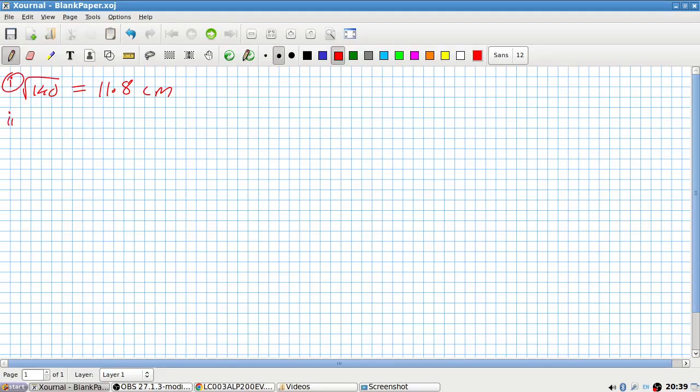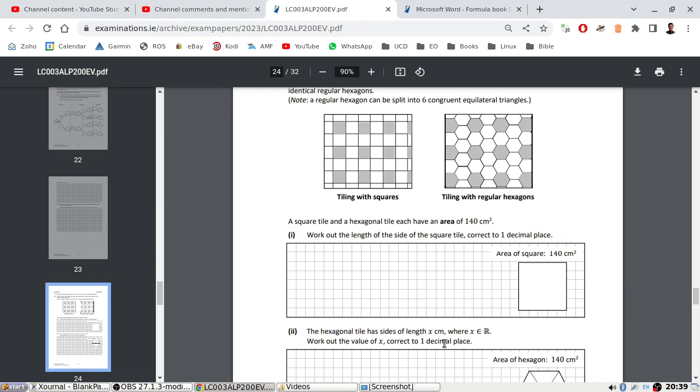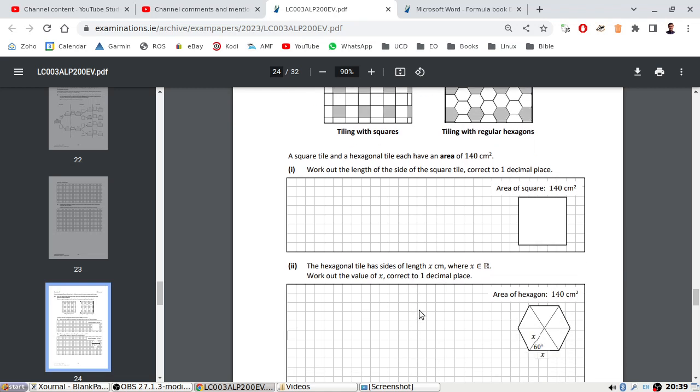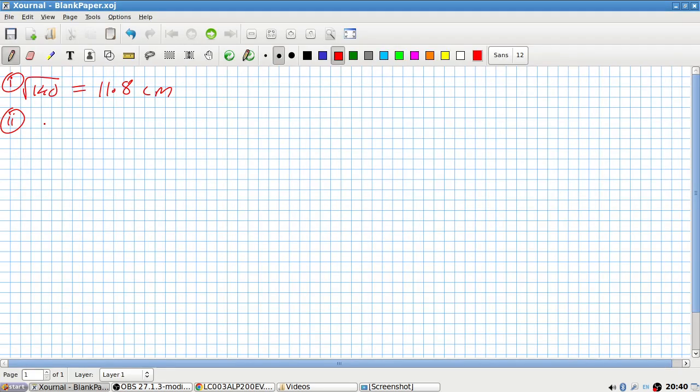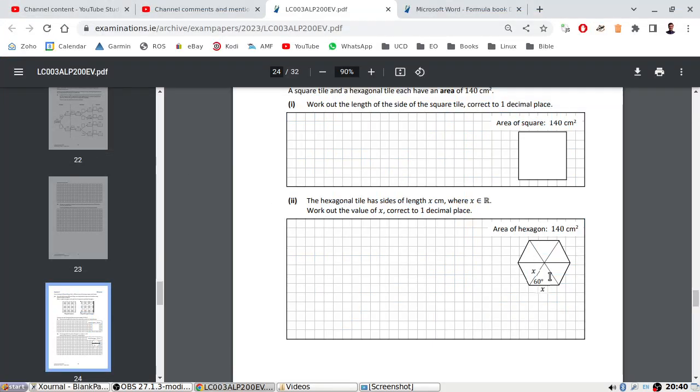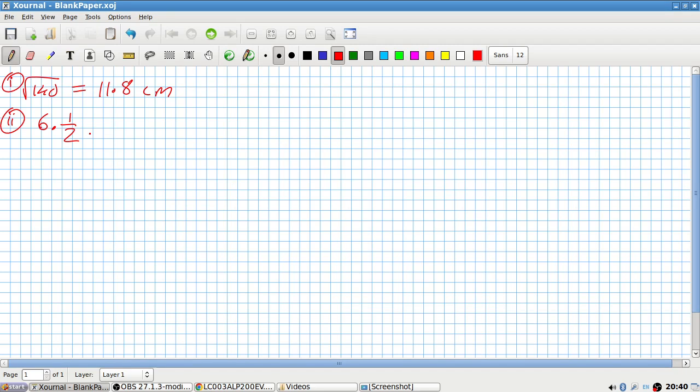Part two: hexagon tile has sides of length x, work out the value of x correct to one decimal place and the area is 140. So the area will be six triangles and we can use the area rule that says the area of this triangle is a half a b sine c, a half a b x by x sine the angle in between. That should equal 140. So solving that you get x is 7.3 centimeters.